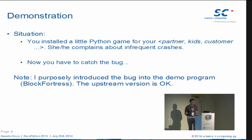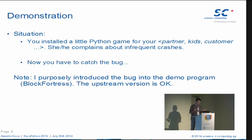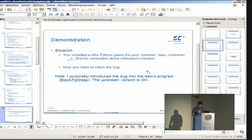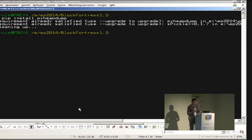It's time for a little demonstration. Think of the following situation: you installed a little Python game for a partner, your kids, or a customer, and then they complain about crashes occurring every now and then, and you have to catch the bug. I used the game Block Fortress and introduced the bug, so the upstream version is perfectly fine. First, we instrument our Python installation to create dumps — it's as simple as pip install pyheapdump, which is already installed.